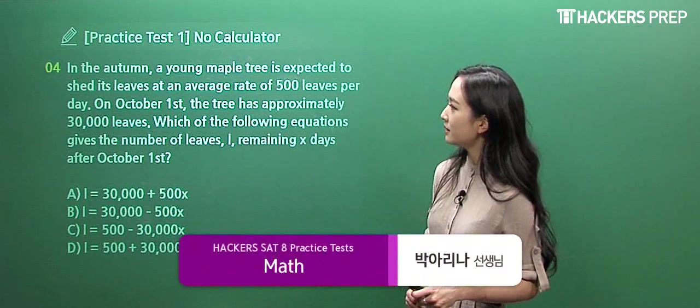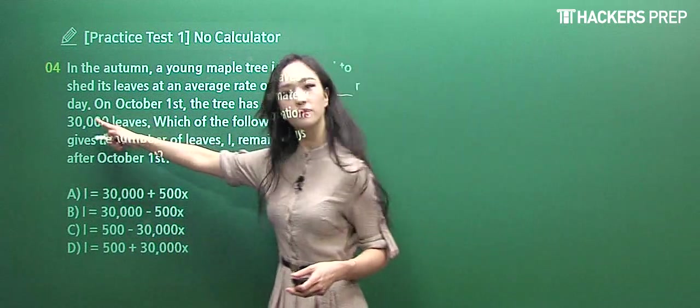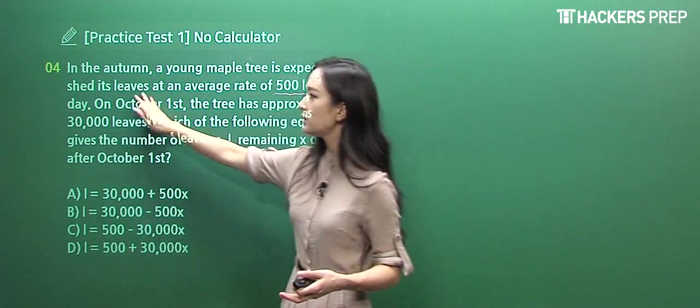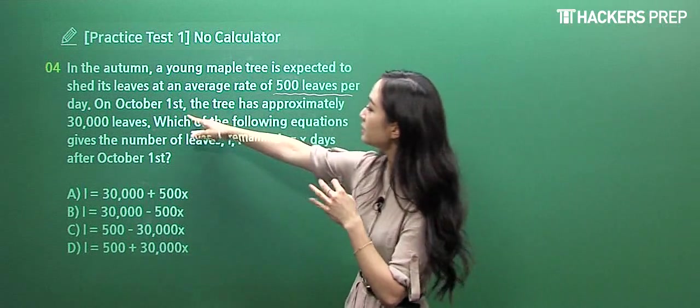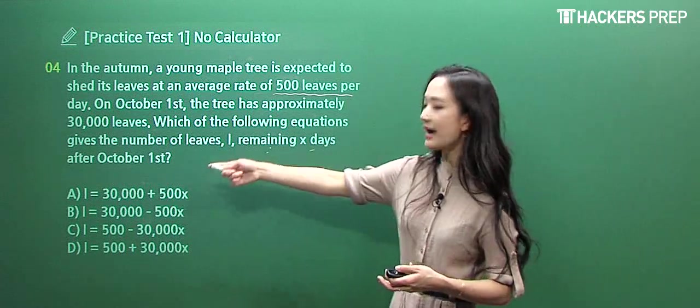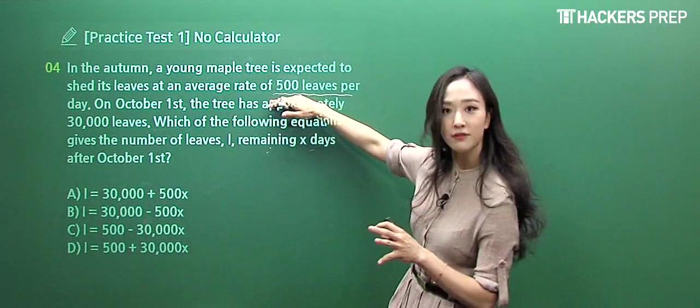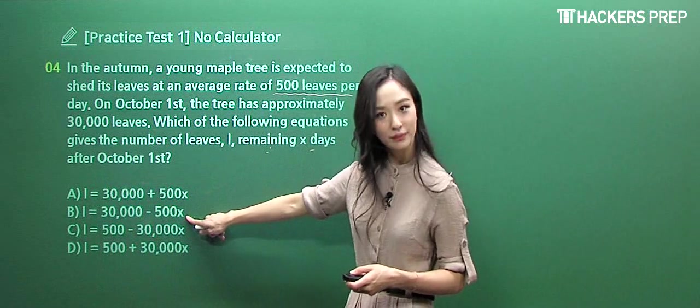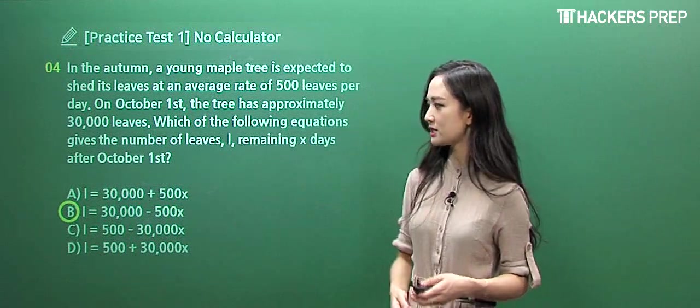For number four, they said in the autumn a young maple tree is expected to shed its leaves at an average rate of 500 leaves per day. On October 1st, the tree has approximately 30,000 leaves. Which of the following models the leaves remaining X days after October 1st? So initially this is your starting number and you're decreasing it by 500 per day. The number of leaves left would be initial minus the rate or slope, so the correct answer is B.